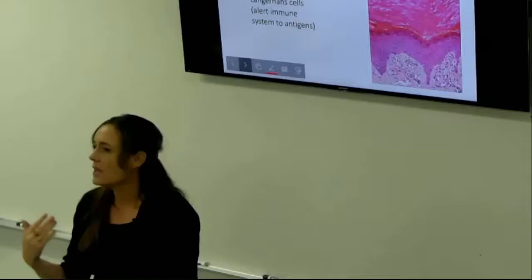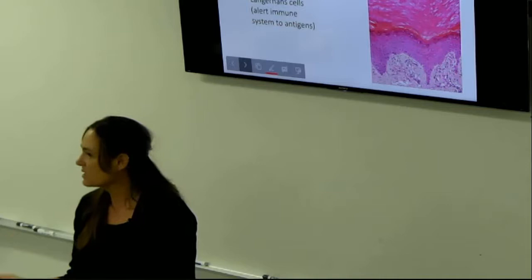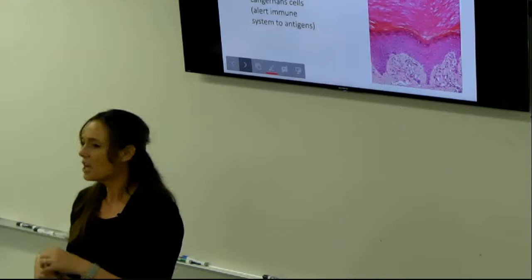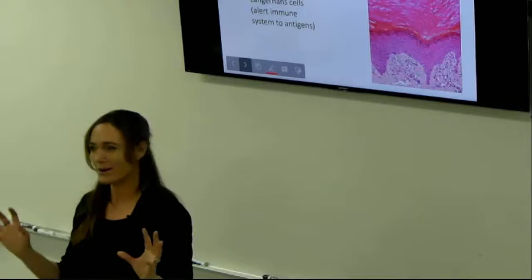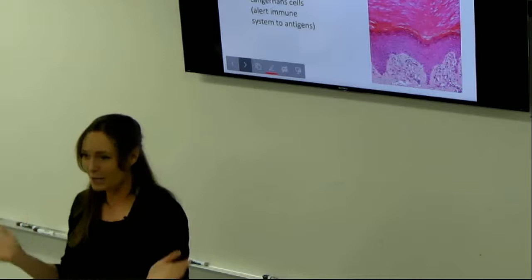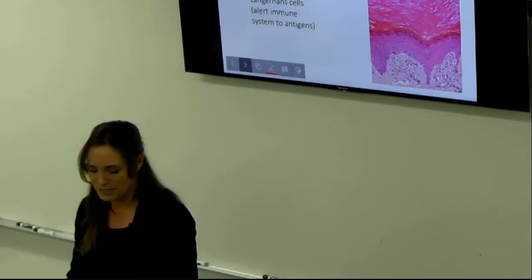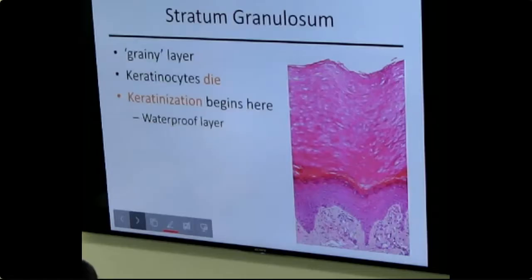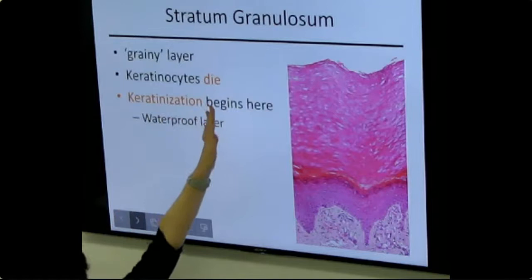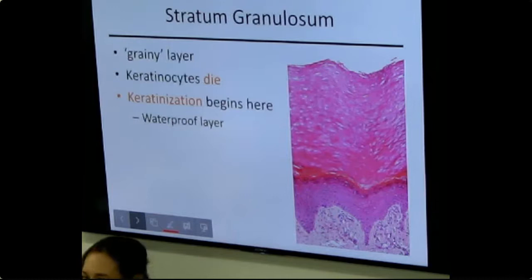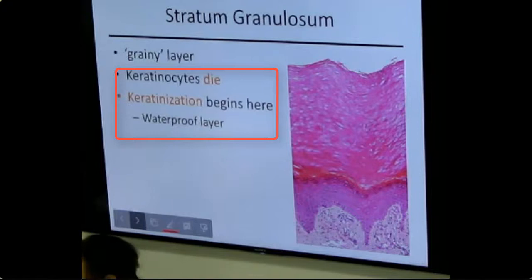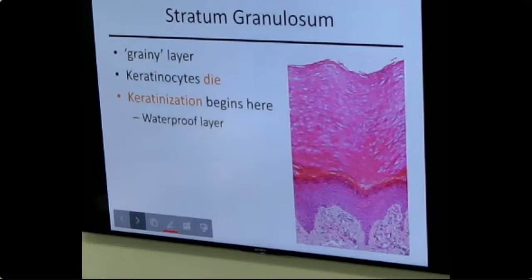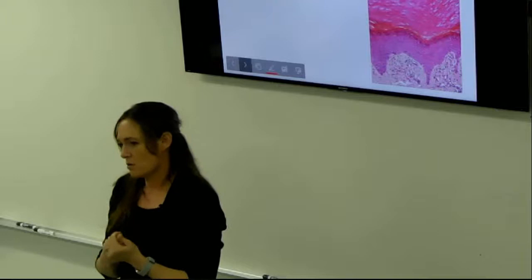Stratum spinosum also contains Langerhans cells — immune system scouts. If you scratch yourself and bacteria enters, Langerhans cells bring it back to the immune system for identification. At stratum granulosum, keratinocytes have died — they're far enough from the blood supply to become flat and dead. The keratin becomes keratinized and now forms our effective waterproof gel layer, keeping us from dehydrating.